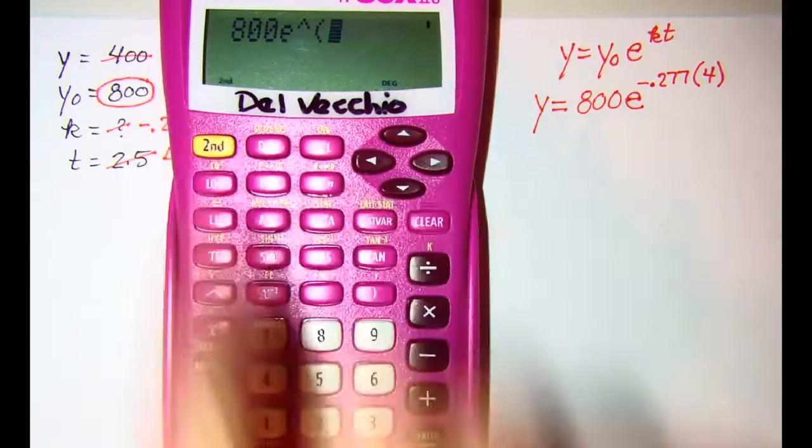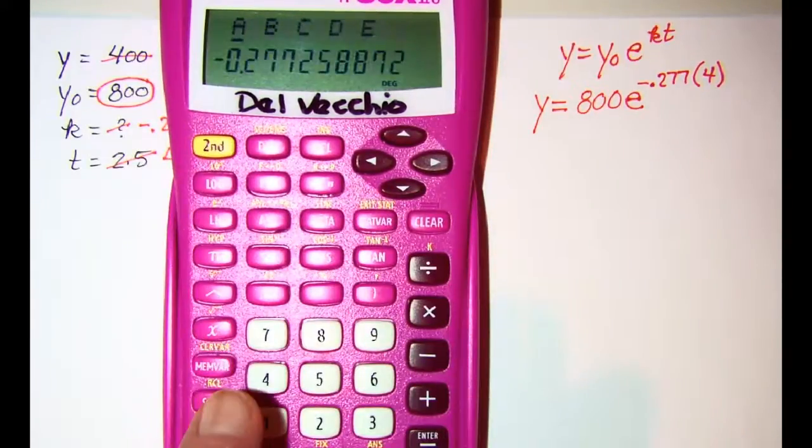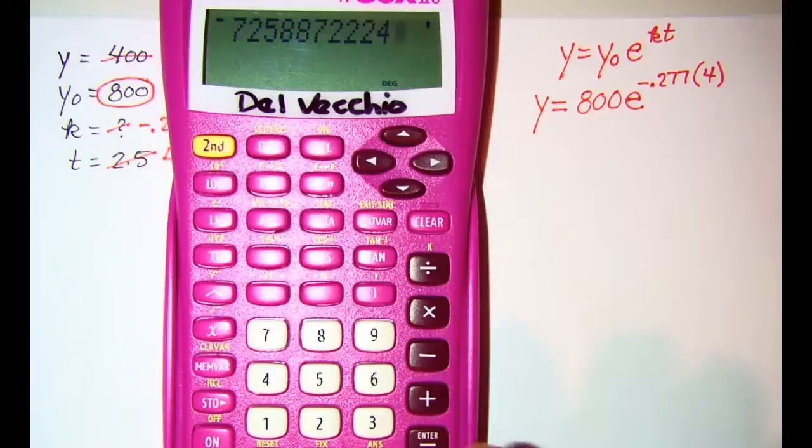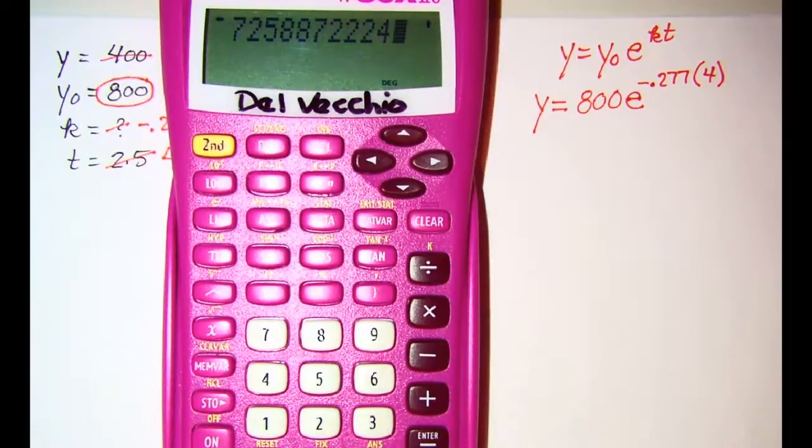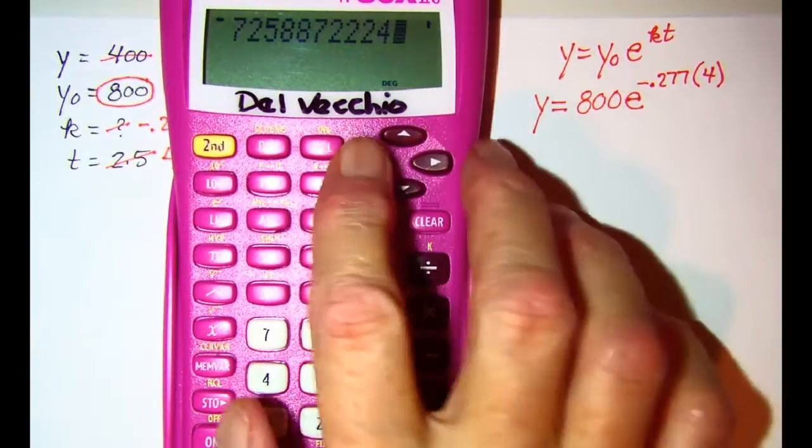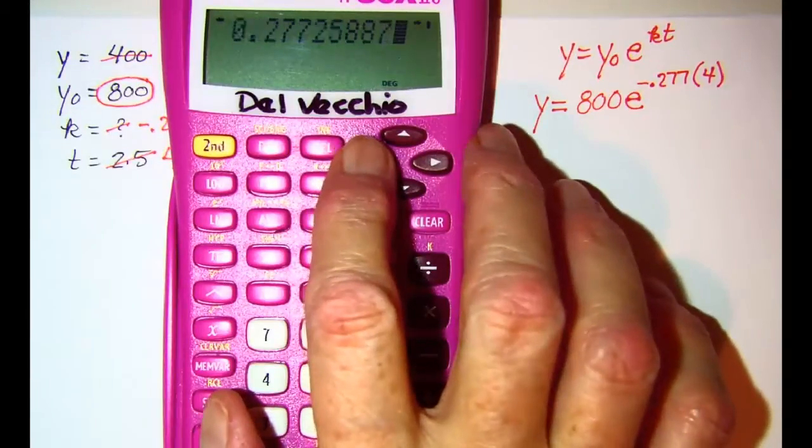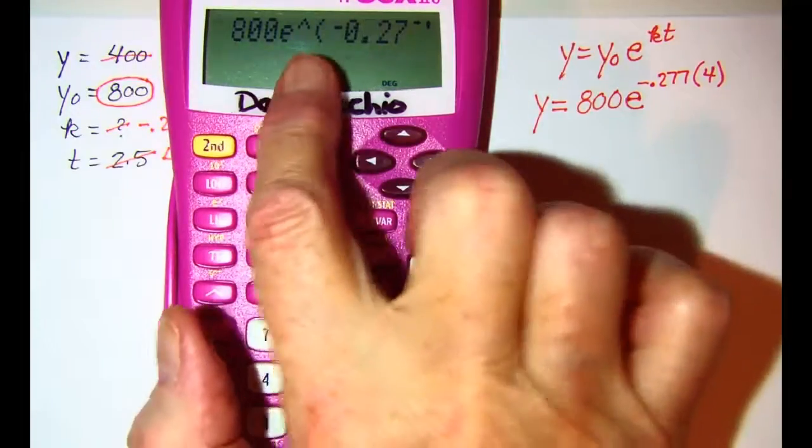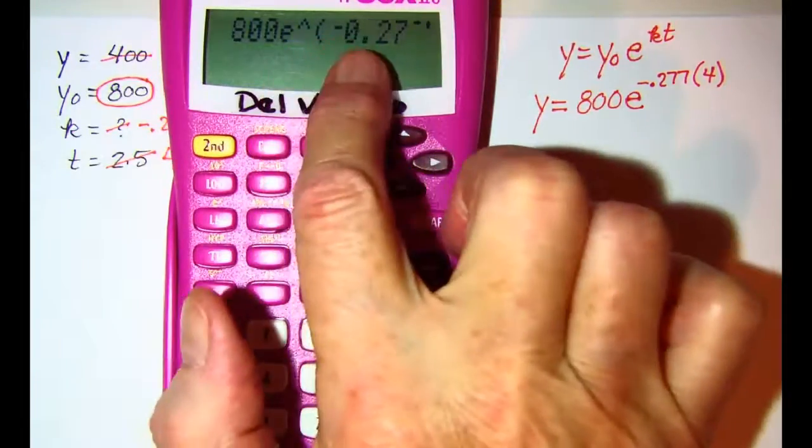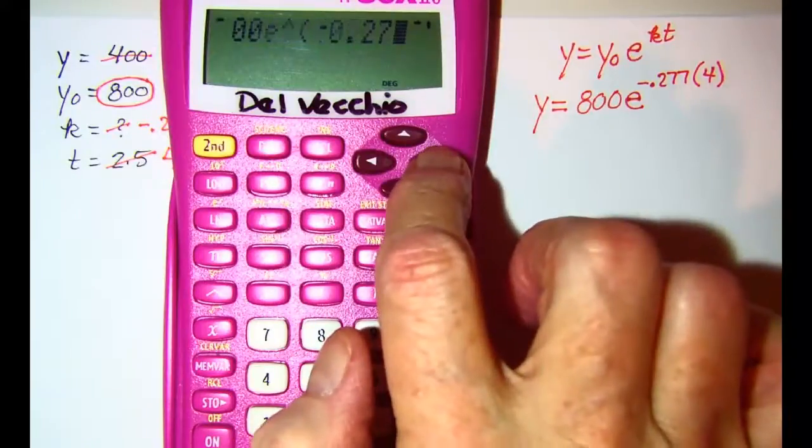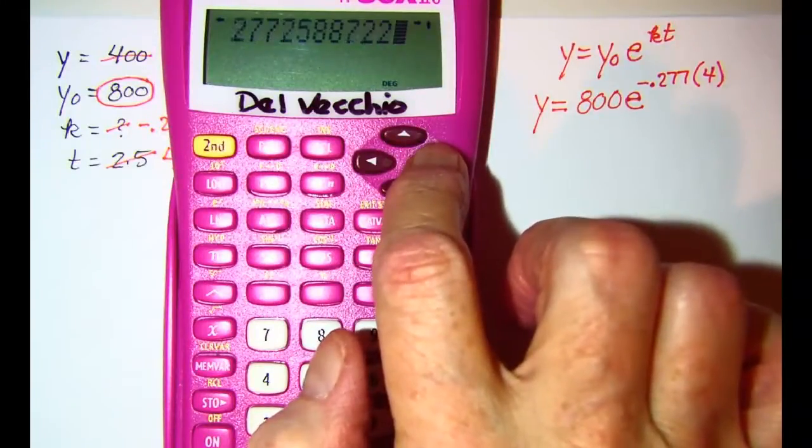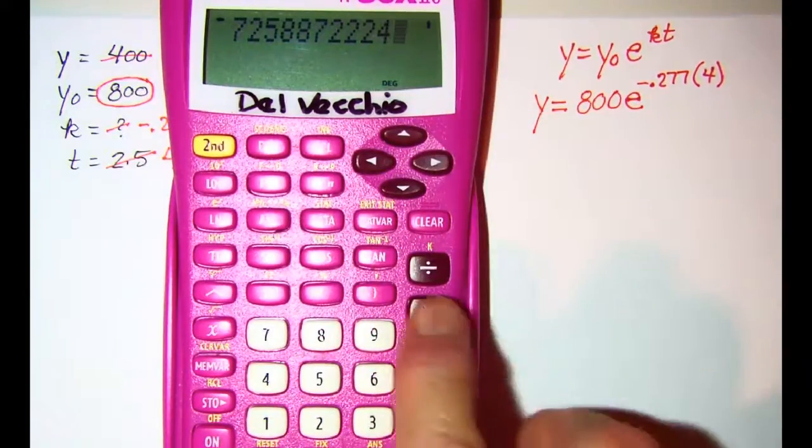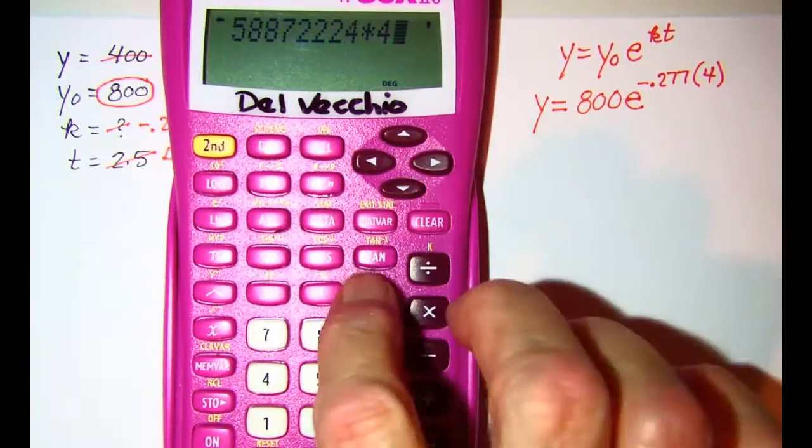So second recall and I put it in memory A so I need to press enter. Now you can't see everything that's there but if we move to the left there's our problem that we've already entered. 800 e raised to the negative and then we're going to keep all those decimals and multiply that by 4 and then close up our exponent.